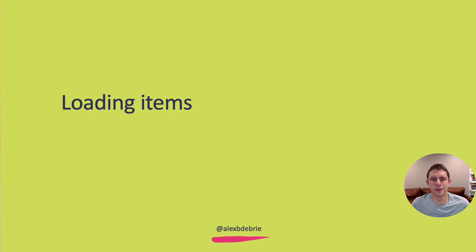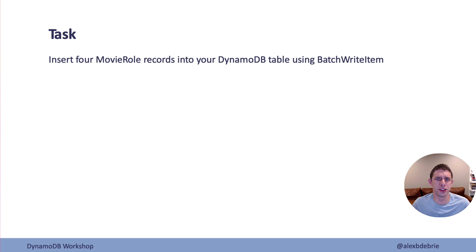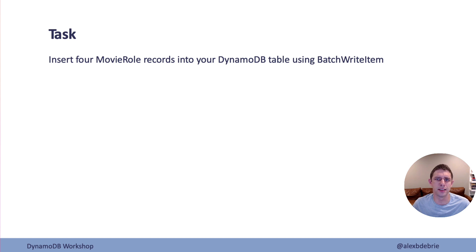First we need to load some items into our table. This is going to be similar to what we did in the last lesson — just loading some data in. Your task is to insert four movie role records into your DynamoDB table using batch write item. This is the exact same as what we did in the last lesson; the secondary index didn't change anything here. Go ahead and do that — take a few seconds, pause, and come back and see how it's done.